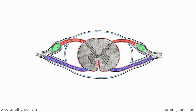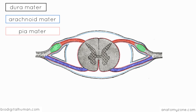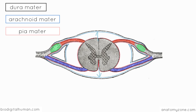If you're familiar with the coverings of the brain, the spinal meninges are exactly the same — you've got three layers: the dura mater, the arachnoid mater, and the pia mater. Just like in the brain, the dura mater is this tough fibrous outer covering which loosely envelops the spinal cord. These meninges are actually continuous with the meninges of the brain. In this diagram, the black line represents the dura mater, going around the outside of the spinal cord. The light blue line represents the arachnoid mater, and between the dura mater and the arachnoid mater you've got the subdural space.